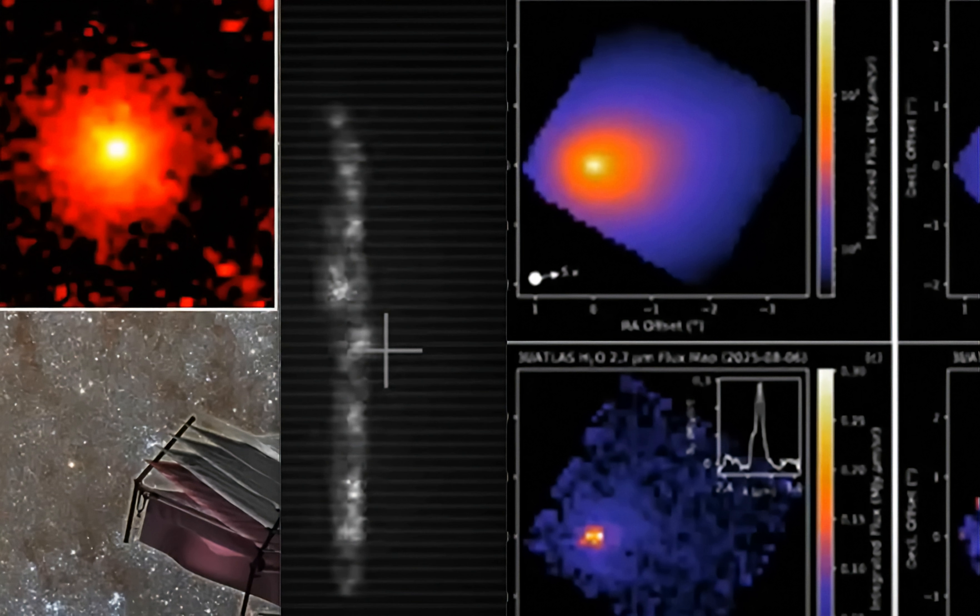This is DAPU7. We have some updated information here in regards to the 3i Atlas. Is this thing really a comet is the question. We have scientists all over the world giving their thoughts on this and new data is now in.